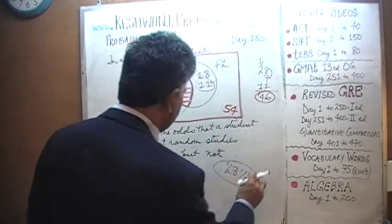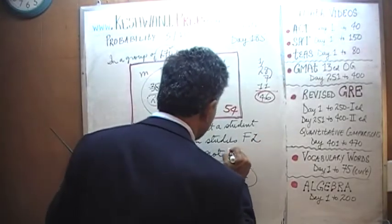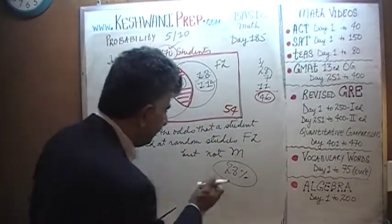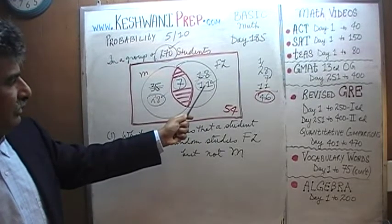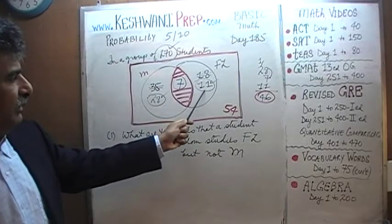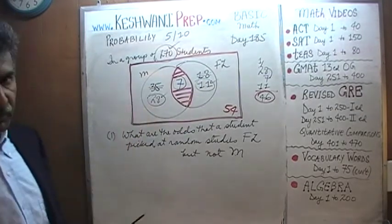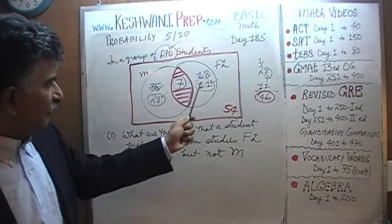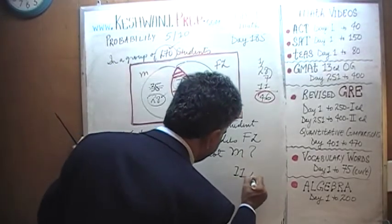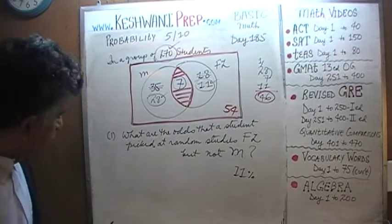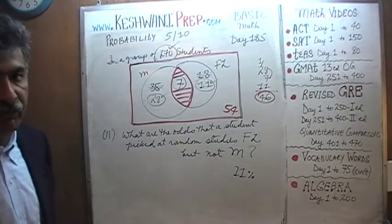Let's look at the second problem. What are the odds that a student picked at random studies foreign language? There are 18 people who study foreign language total. Out of those 18, 11 of them study only foreign language and do not study music, while 7 study both. What are the odds that a student picked at random studies foreign language but not music? The answer is 11%.